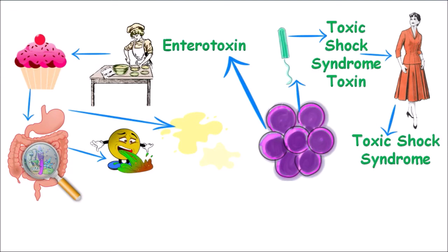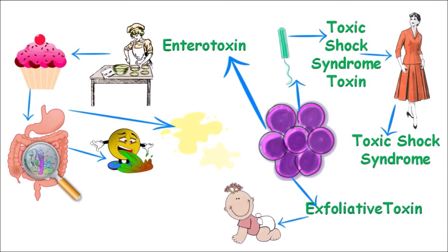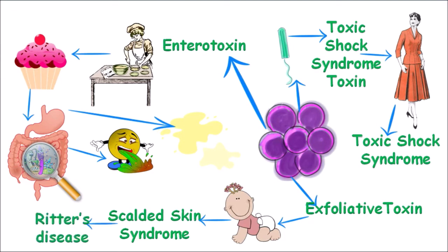Staphylococcus aureus produces another toxin known as epidermolytic toxin or exfoliative toxin, which causes scalded skin syndrome in children or small babies. It is characterized by exfoliation and separation of the epidermis of the skin and tender blisters. The severe form is known as Ritter's syndrome, which is characterized by fever, lethargy, and irritability.